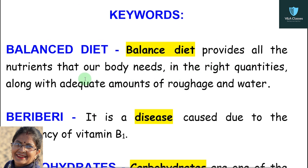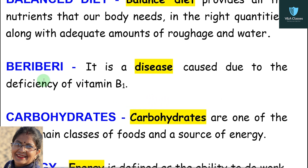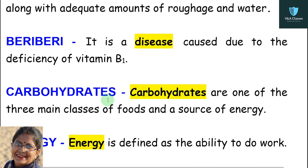Balanced diet provides all the nutrients that our body needs in the right quantities, along with adequate amounts of roughage and water. Next — beriberi: it is a disease caused due to the deficiency of vitamin B1.